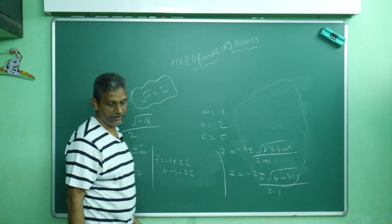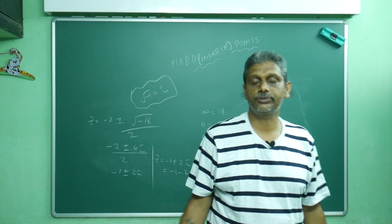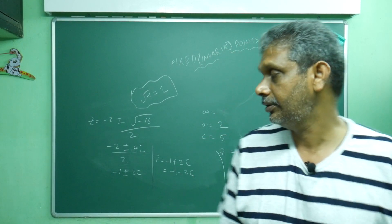If they ask for the fixed points of a transformation, do not worry. Put w equals z, solve, and you will automatically get the fixed points.